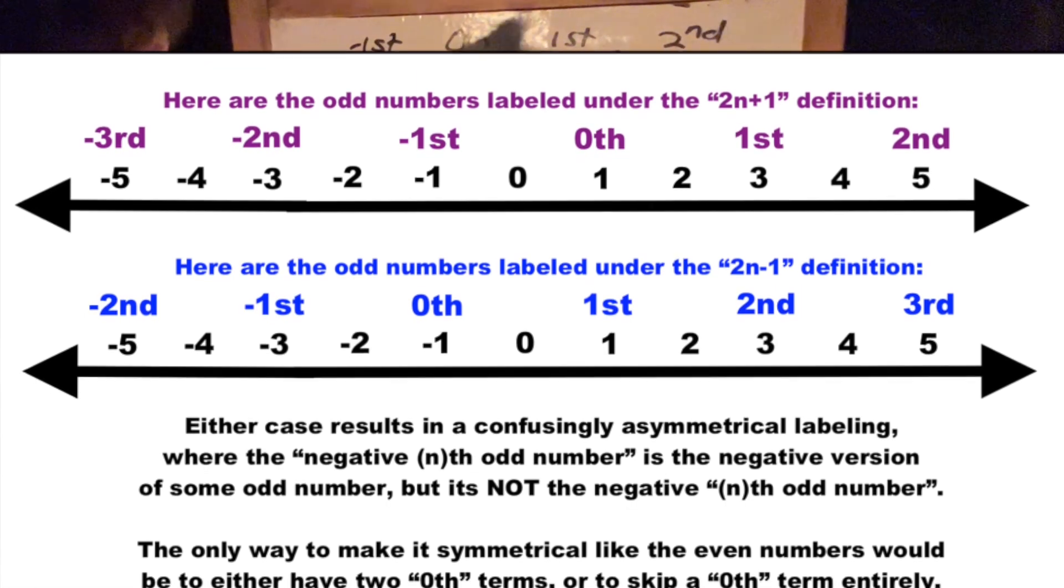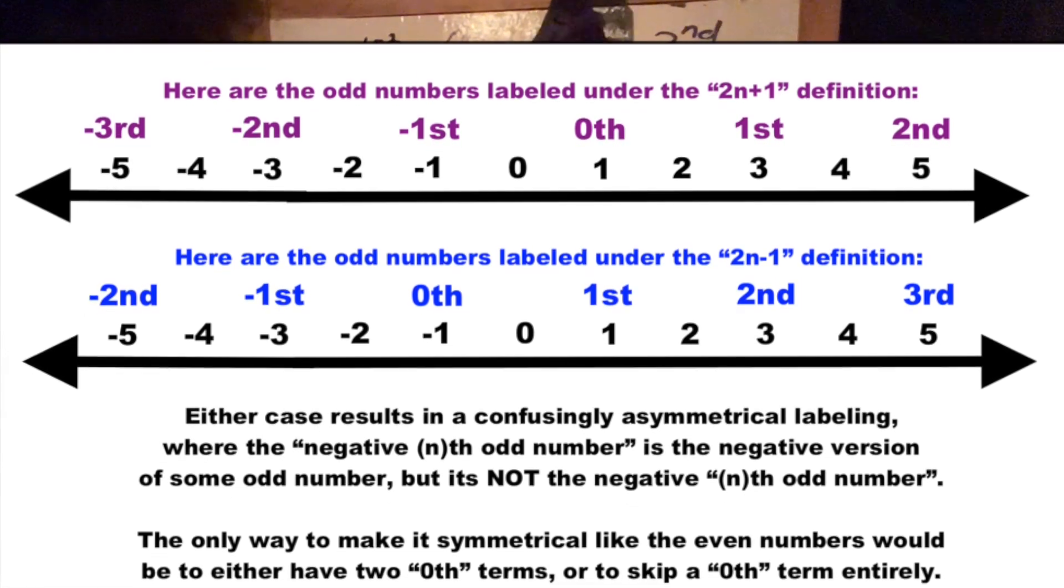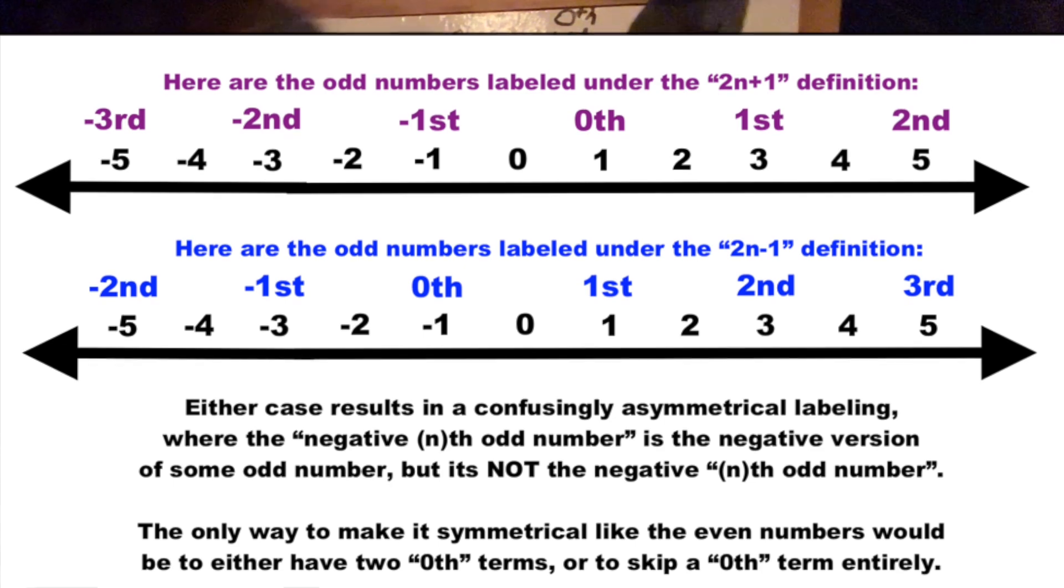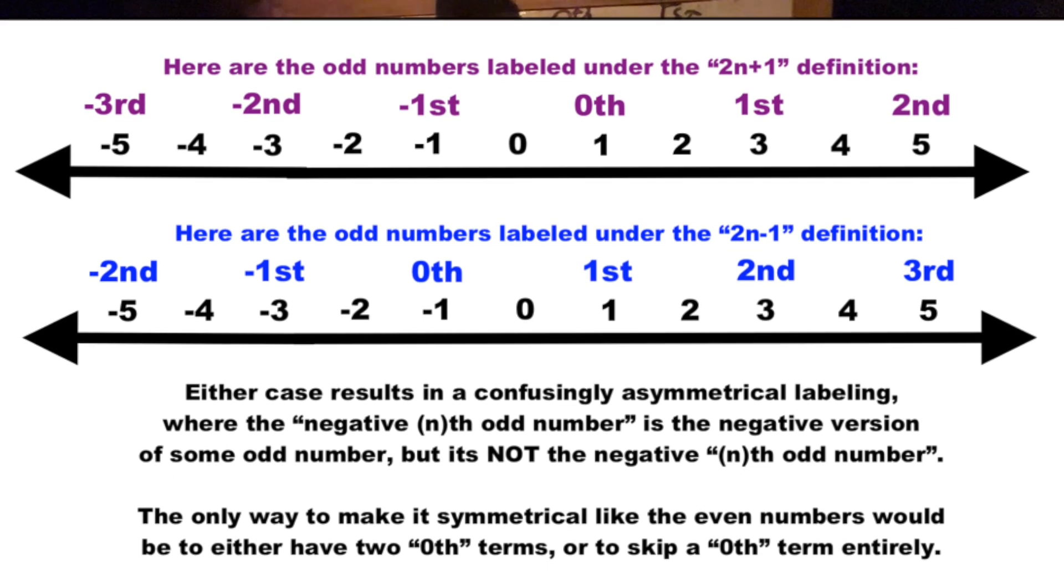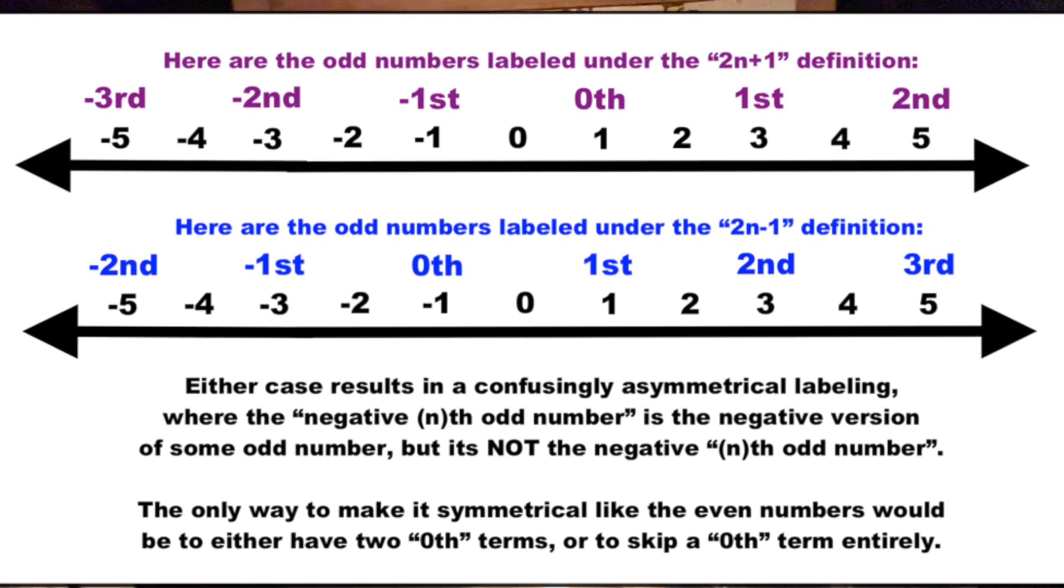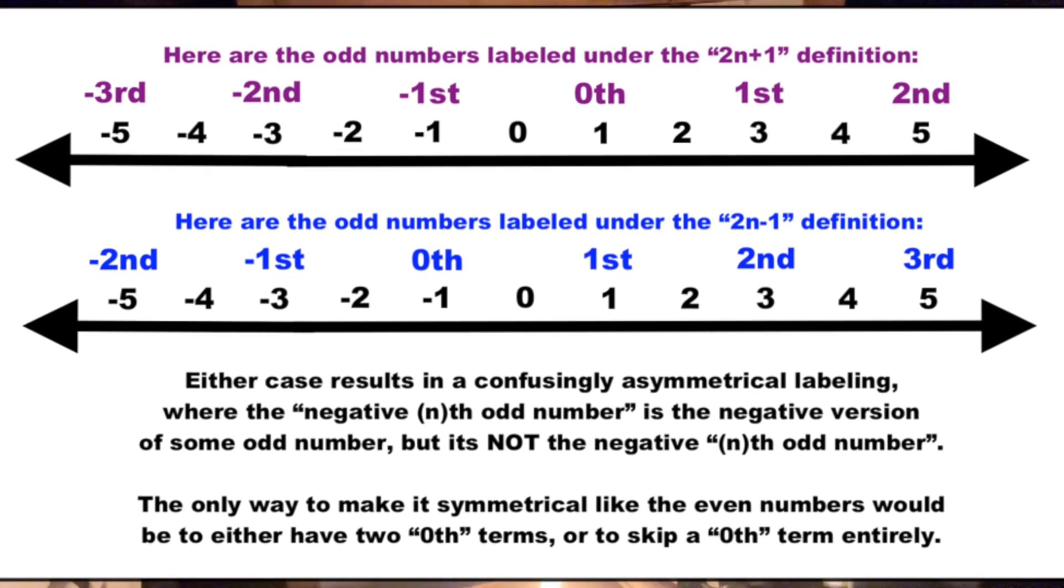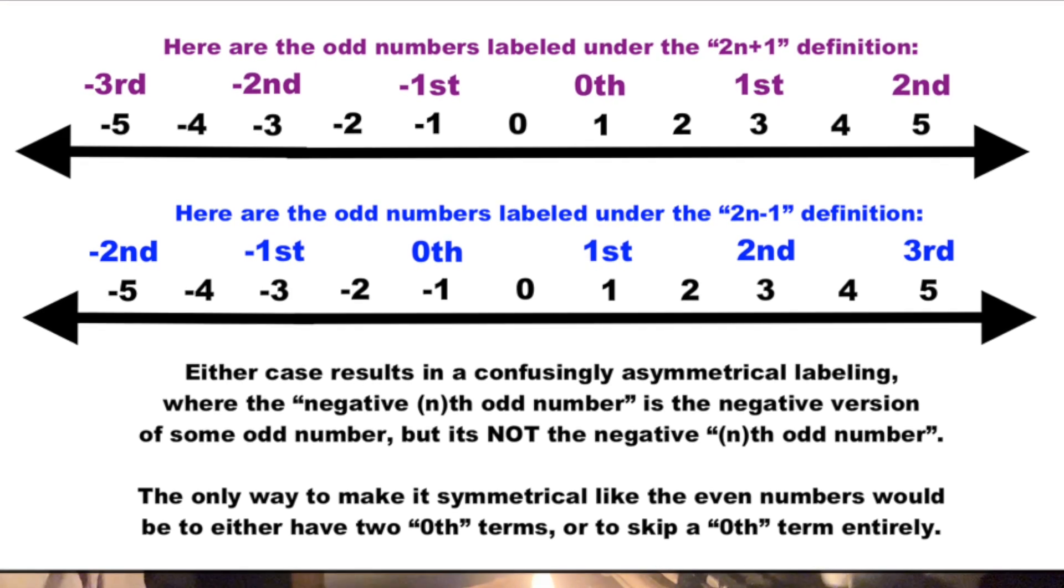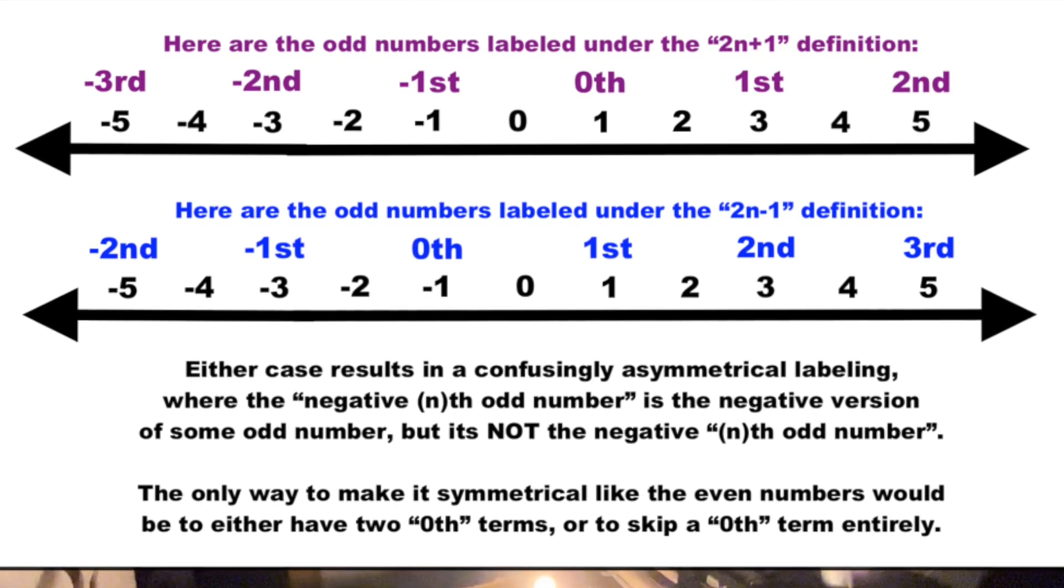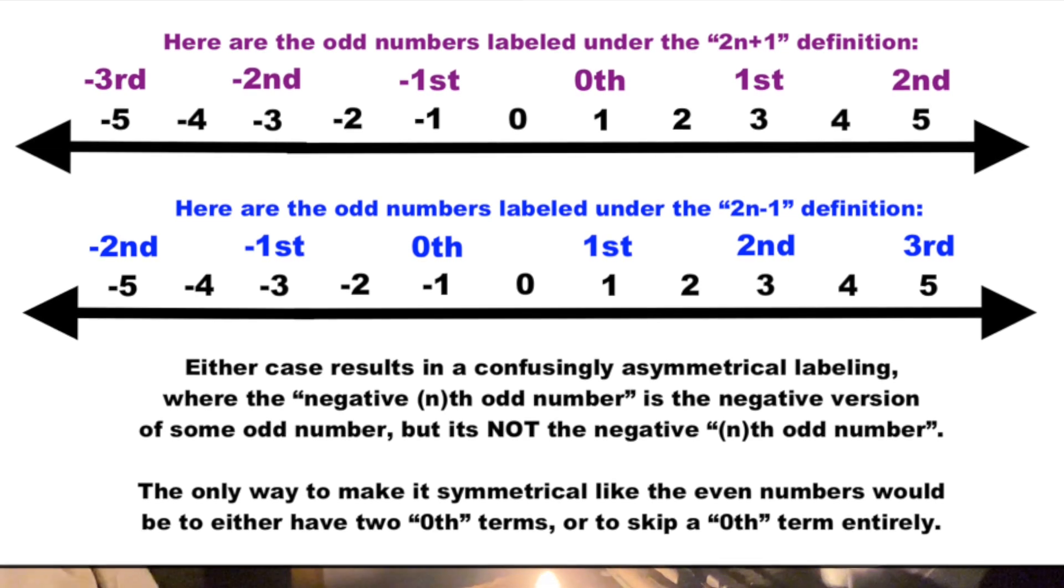Or our other way of labeling them was to call that the zeroeth, in which case that's the first, that's the negative first, and it's still uneven. So in either case, we can't make the odd numbers symmetrical. They get two definitions, but neither of the definitions worked cleanly in the way that the even numbers do.